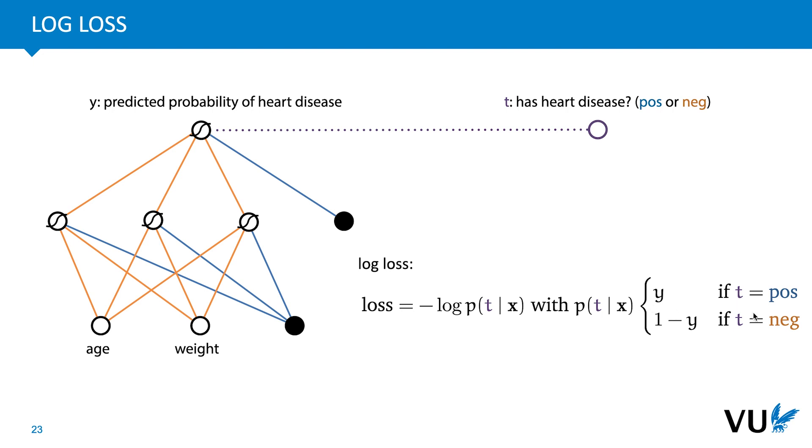The negative logarithm of the probability of the true class according to the network. That is, if the true class is positive, then we take the negative logarithm of y, the output of the network, because the output of the network is the probability that the class is positive. And if the true class is negative, we take the negative logarithm of 1 minus the output of the network, because that is the predicted probability that the class is negative. The base of the logarithm can be anything, but it's usually e or 2.